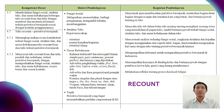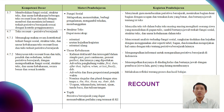The next core material is recount text. There are two basic competencies: 3.7 for knowledge competence, where students are hoped to know and understand the concept of the recount text; and 4.7 for skill competence, where students are hoped to understand the meaning of the recount text and write a recount text on their own. The learning materials include the social function of recount text, followed by text structure and linguistic elements.